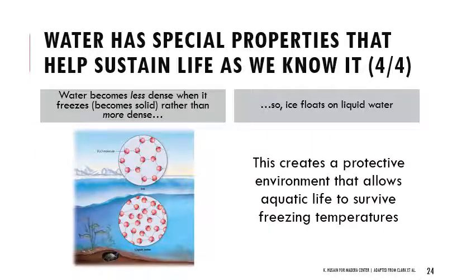Finally, water is unique in that it becomes less dense when it freezes — going from a liquid phase to a solid phase, water becomes less dense, which means ice is able to float on liquid water instead of sinking. If you think about all the aquatic life that exists in very cold places, the reason it survives is because the ice forms a protective layer across the top that insulates the organisms living inside those lakes and oceans and allows life to continue.